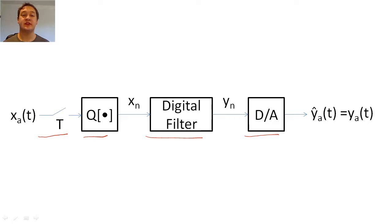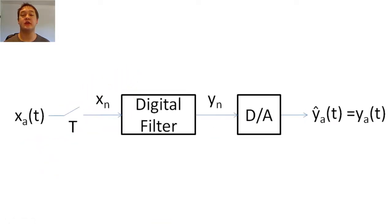For the sake of simplicity, we will ignore the effects of the quantizer on filtering. Since we are focusing on sampling, we will assume that our digital filter allows y sub n to equal x sub n, so we can focus on how to exactly reproduce x sub n after we convert back and forth from the digital domain. Therefore, remove the filter for this discussion.